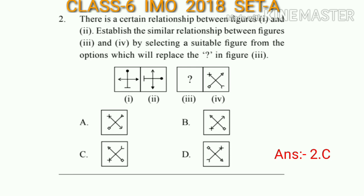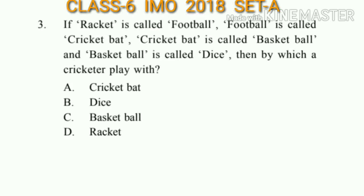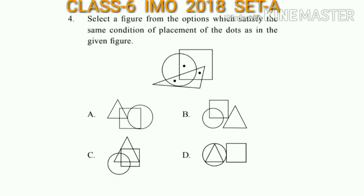Question number 3: If racket is called football, football is called cricket bat, cricket bat is called basketball, and basketball is called dice, then by which does a cricketer play? A cricketer plays with a cricket bat, and here cricket bat is called basketball. So the answer will be option C.